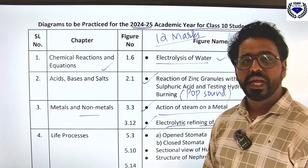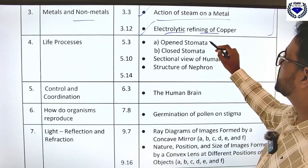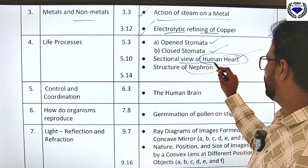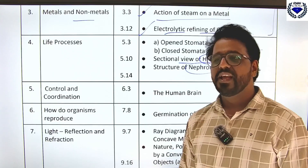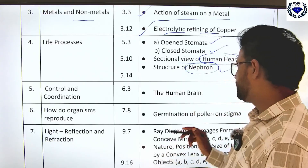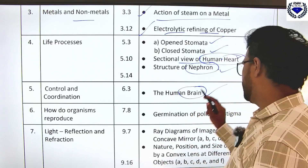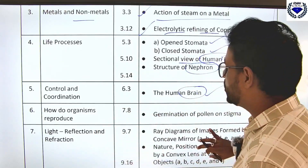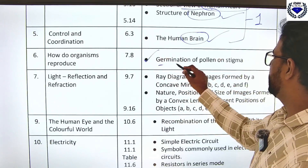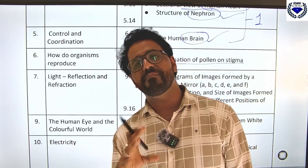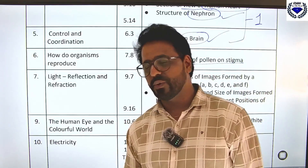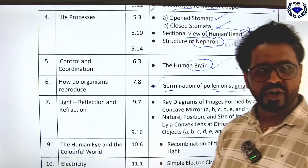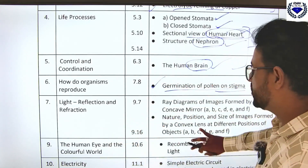Moving to biology diagrams: from Life Processes, practice open stomata and closed stomata, sectional view of human heart, and nephron — expect two of these three for four marks. From Control and Coordination, one diagram: the human brain — out of these, one will come for sure. From How Do Organisms Reproduce: germination of pollen on stigma, and you can also practice the hibiscus flower. So biology diagrams are: stomata (open/closed), human heart, nephron, brain, and pollen on stigma.